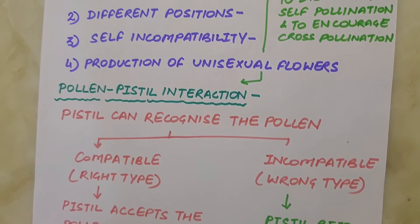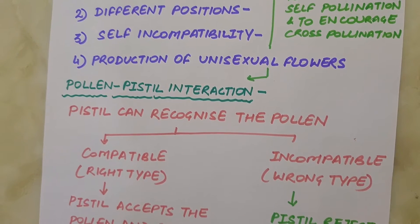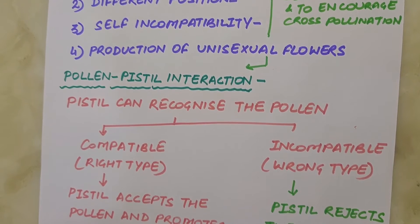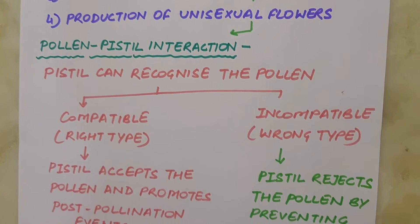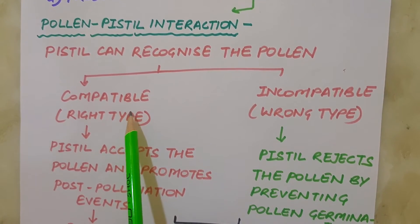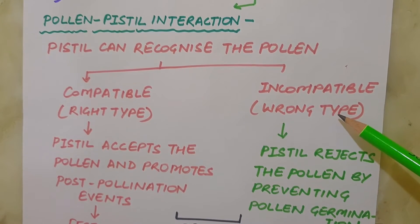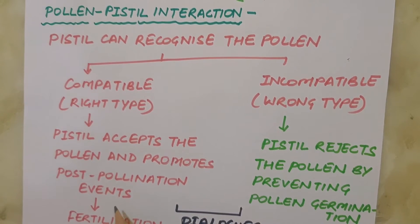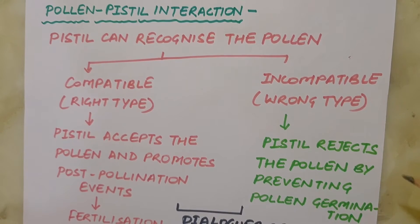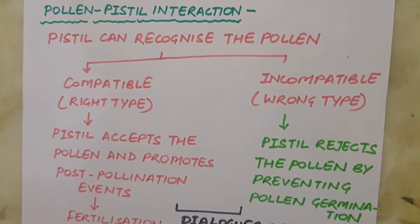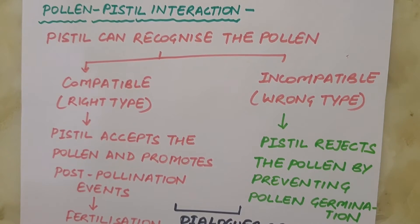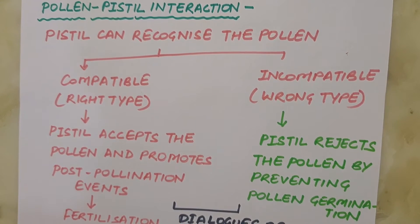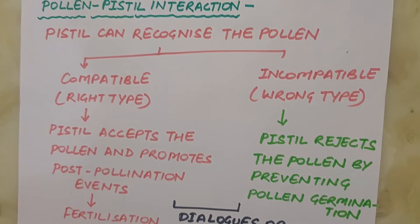Next is pollen-pistil interaction. Pollination does not guarantee the transfer of the right type of pollen — compatible pollen of the same species as the stigma. Often pollen of the wrong type, either from another species or from the same plant if self-incompatible, also lands on the stigma. The pistil has the ability to recognize the pollen, whether it is of the right type (compatible) or wrong type (incompatible). If compatible, the pistil accepts the pollen and promotes post-pollination events leading to fertilization. If incompatible, the pistil rejects the pollen by preventing pollen germination or pollen tube growth in the style. This dialogue between pollen grain and pistil is mediated by chemical components.